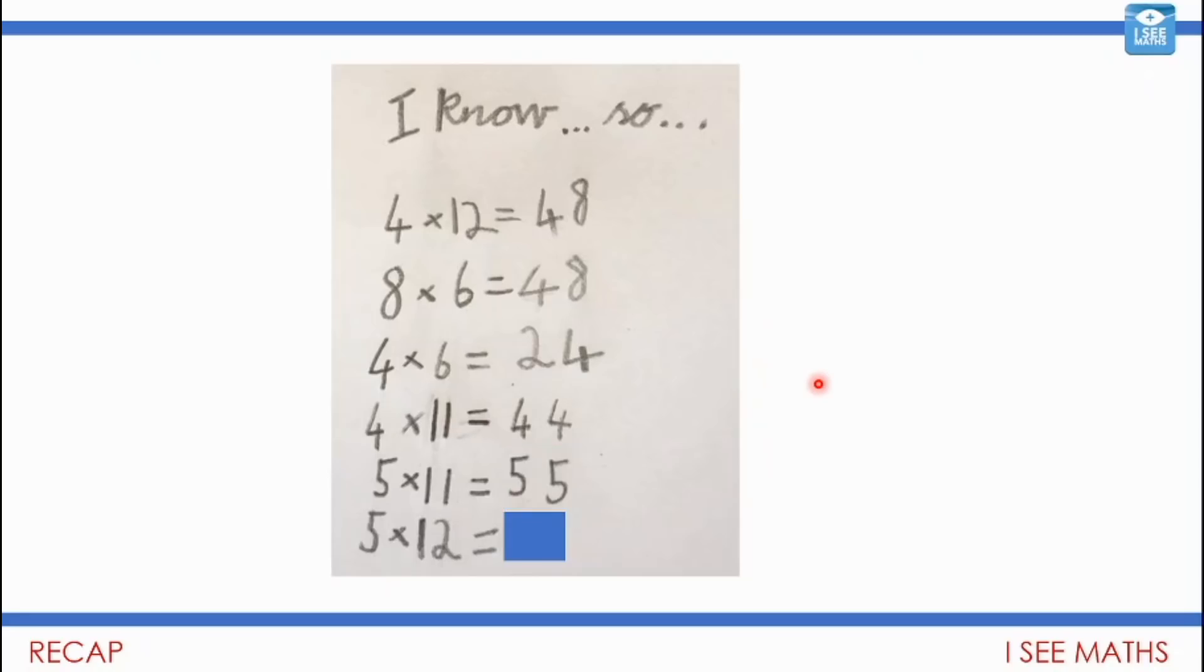5 lots of 11? 55. And now what about 5 lots of 12? So it's still fives but then I'll have another 1 five. So 5 twelves? 60. Well, love that sequence. I hope you managed to see some of those connections.